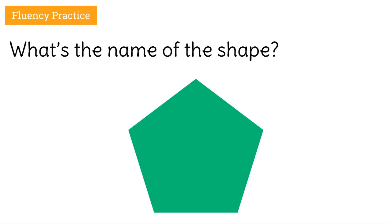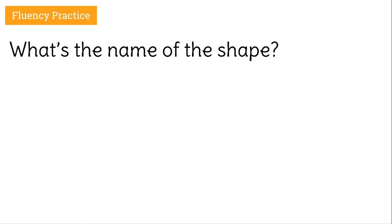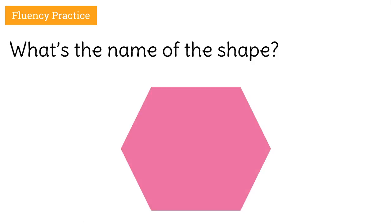How about this shape? Some of you may have gotten this. This is what we call a pentagon because it has five sides: one, two, three, four, five. Let's try another one. This shape has six sides, so we call it a hexagon.